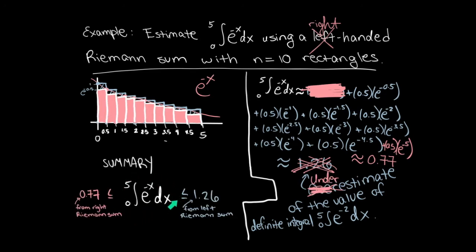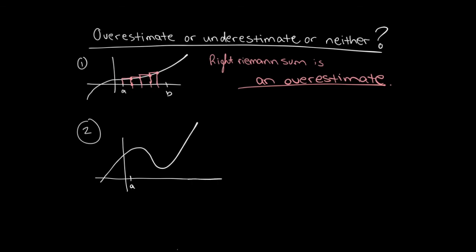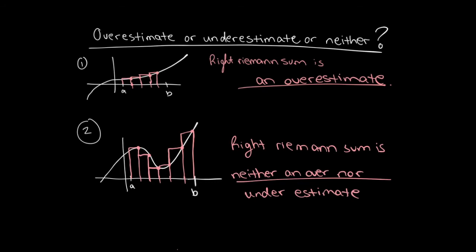As you can see from the picture, the right Riemann sum is an underestimate of the actual area under the curve. The actual value of the area between the x-axis and e to the minus x we don't know, but it's approximately somewhere between 0.77 and 1.26. When the function is decreasing, the right-handed endpoint goes underneath the function and the left-handed endpoint goes over the function. Now suppose the function is increasing from A to B — will a right Riemann sum be an overestimate or an underestimate? Using the right-handed endpoints, you can see these go above the function — it's an overestimate. If the function is increasing and decreasing in between A and B, the Riemann sum is neither an overestimate nor an underestimate. Each picture needs to be evaluated based on its own merits.